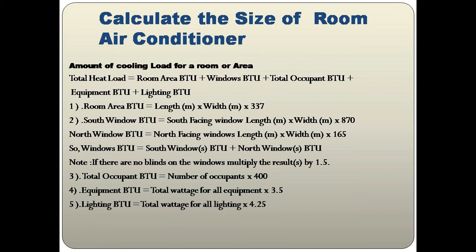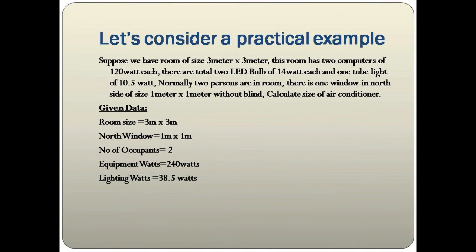For Lighting BTU: calculate the total wattage of all lighting and multiply by 4.25. Now let's consider a practical example. Suppose we have a room of 3 m × 3 m with two computers of 120 watts each, two LED bulbs of 14 watts each, one tube light of 10.5 watts, and normally two persons in the room.